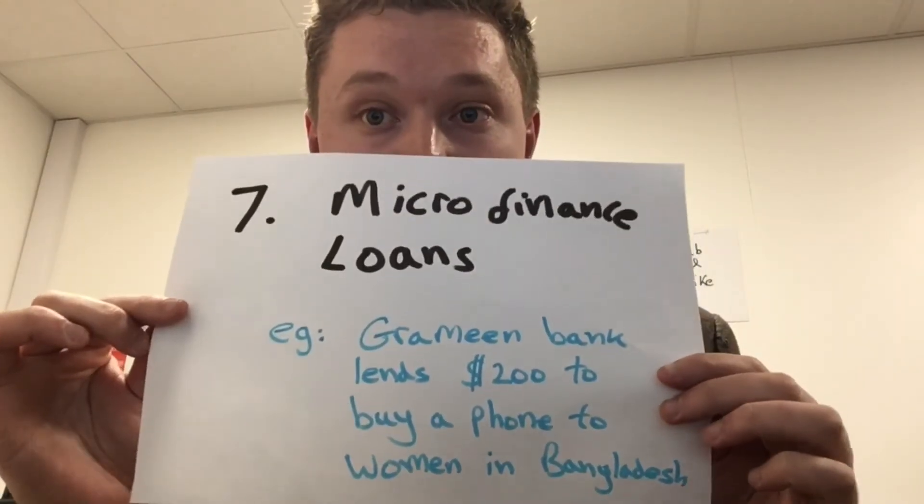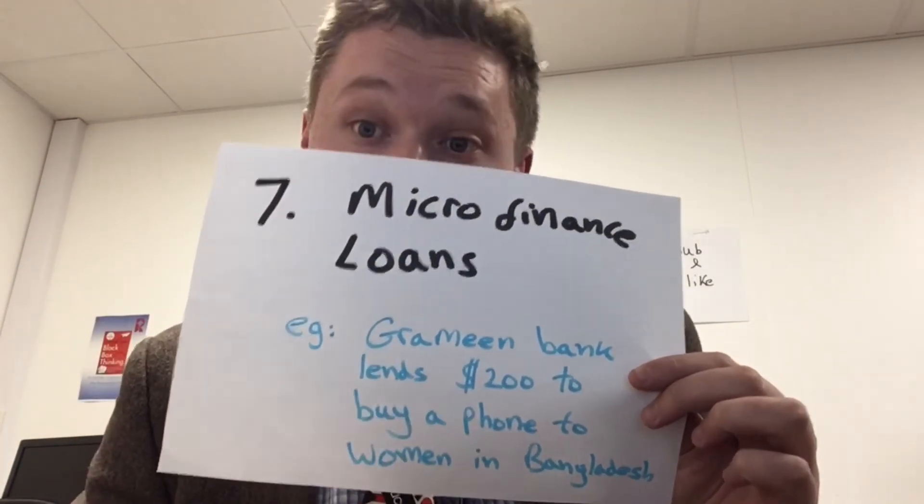The seventh strategy is microfinance loans, where a small loan is given to somebody who can't afford to start up their own business. The money allows them to start a business — for example, a bank in Bangladesh gives women $200 to buy a mobile phone, which they can then hire out and charge people to use. Another example is giving farmers a small loan to buy seeds, grow crops, feed their families, and gain a livelihood. Without that microfinance loan they wouldn't have been able to do that. The negative is that these loans eventually need to be paid back, and they're only useful on a small scale because not everyone can get one.